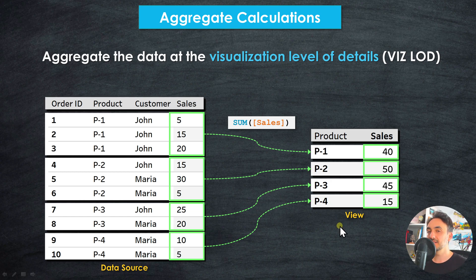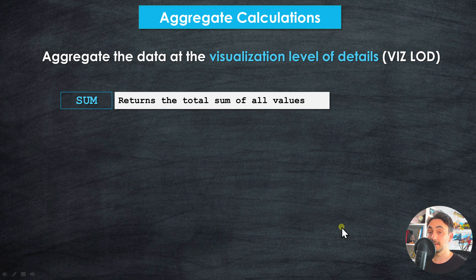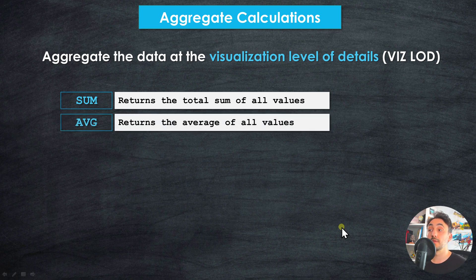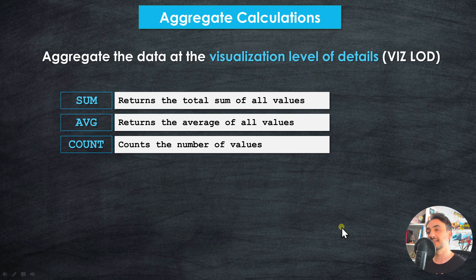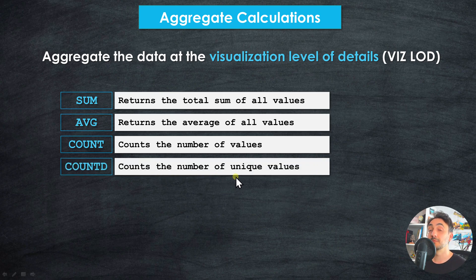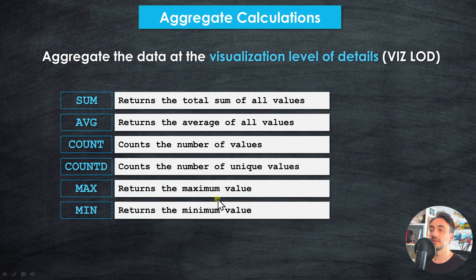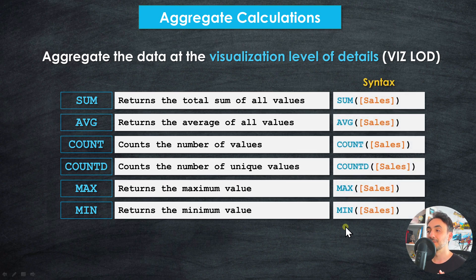We have multiple aggregate functions. SUM returns the total sum of all values within a field. AVERAGE returns the average of all values. COUNT counts the number of values within a field. COUNT DISTINCT counts the number of unique rows within a field. MAX and MIN return the maximum or minimum value within a field. The syntax is the simplest of all function types — they all follow the same pattern: the function name followed by one field, for example SUM(Sales) or AVERAGE(Sales). Now let's go into Tableau and practice these aggregate functions.